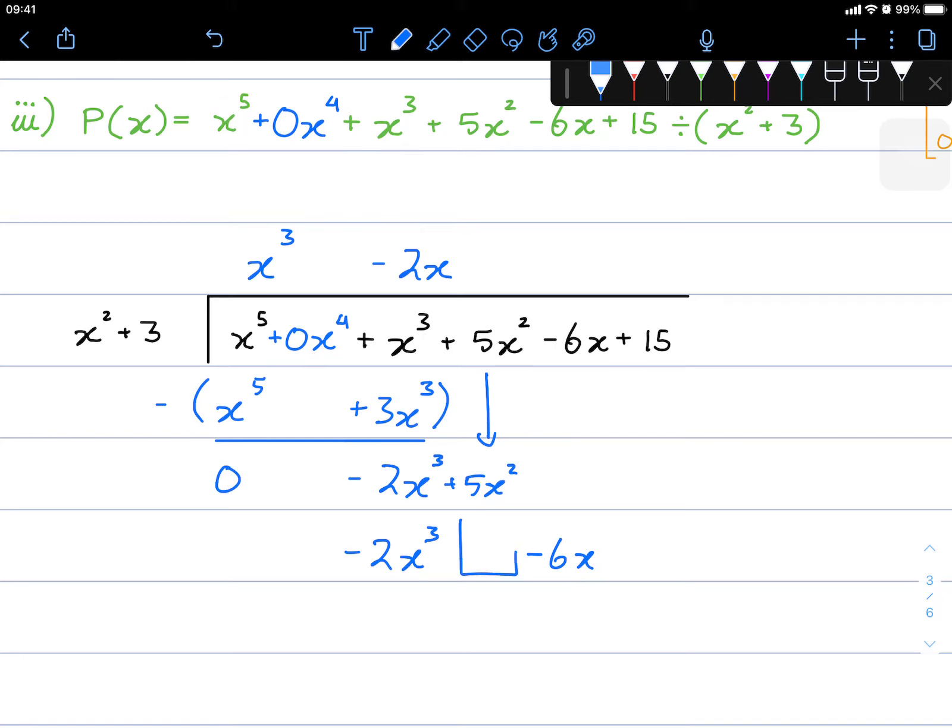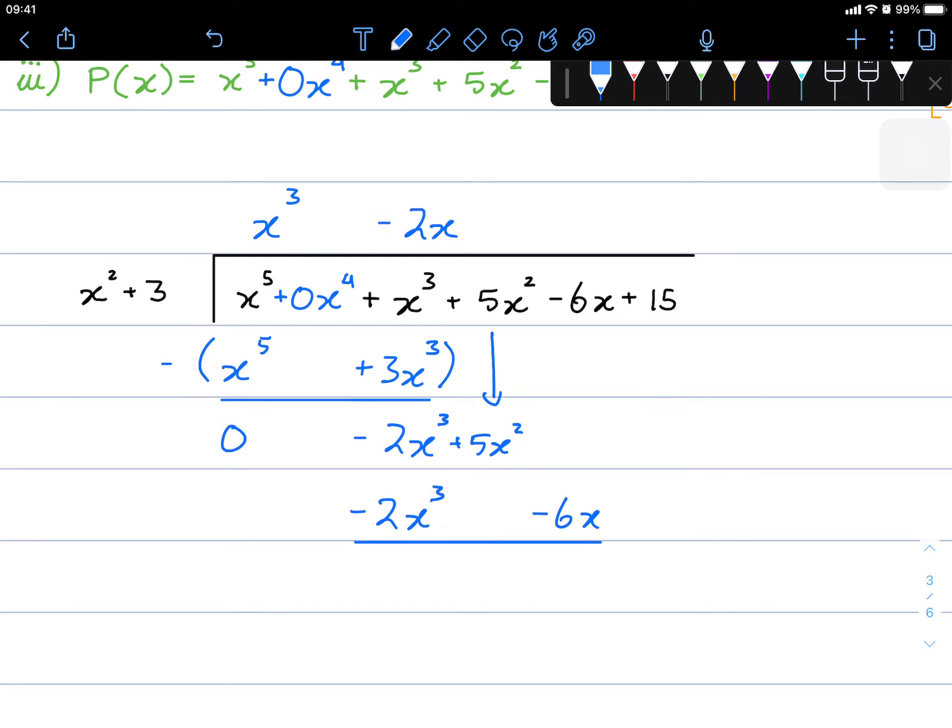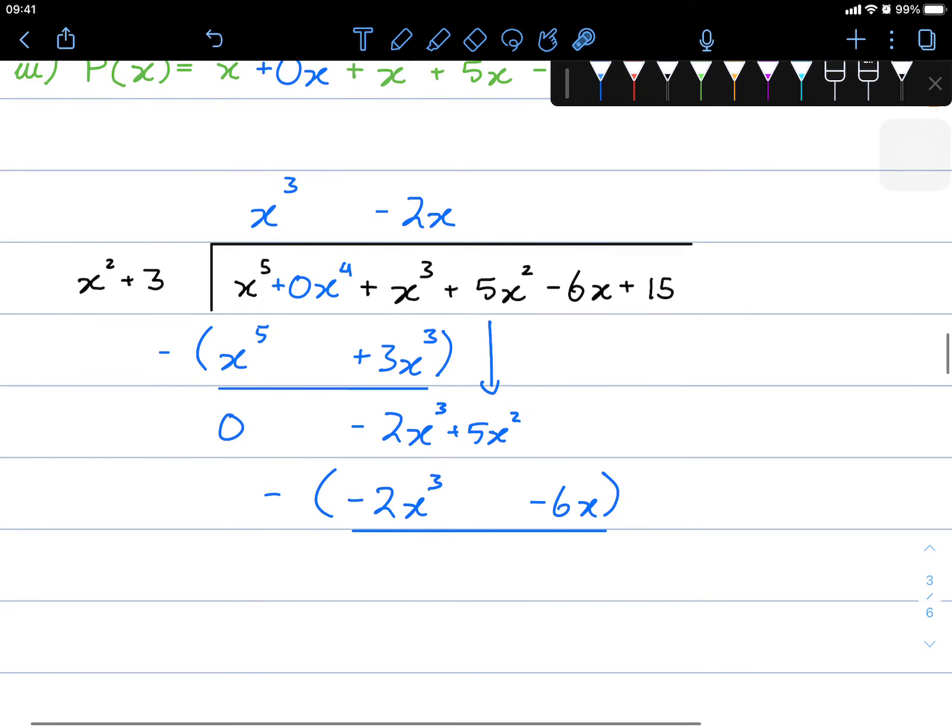Notice how we missed out on that multiplication of x squared. This is no matter because we're still going to continue like so. Negative 2x cubed minus minus this will give us 0. And it turns out we need to borrow even the next term as well.